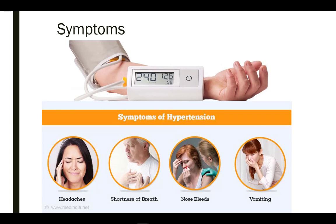If symptoms do occur, they usually show up in the form of headaches, nosebleeds, shortness of breath, vision problems, and irregular heartbeat. Vomiting can also occur if blood pressure gets very high. Blood pressure should be checked at every doctor visit, and people at high risk or who already have known hypertension may even be encouraged to monitor their blood pressure at home.